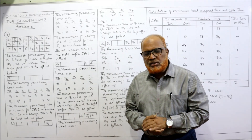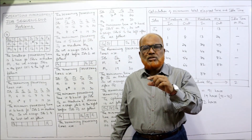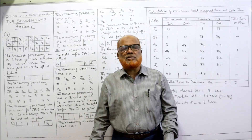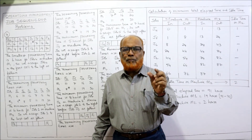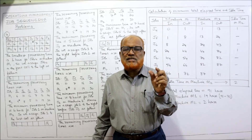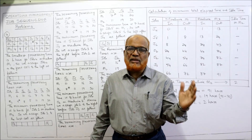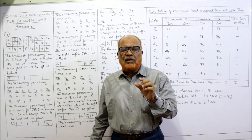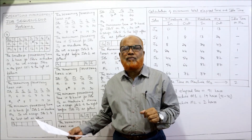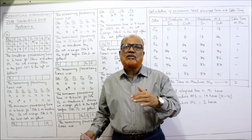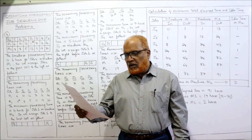Johnson and Bellman have given the technique of finding the solution. Among both machines, we find out the minimum possible processing time. If the minimum processing time is on the first machine, assign the job from the left. If the minimum time is on the second machine, assign the job from the right. Proceed like that until all the jobs are filled out.